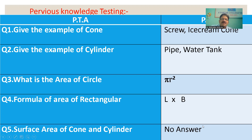First, ask for an example of a cone. From their previous knowledge, students are able to give answers like a screw, ice cream cone, or birthday cap. Second, ask for an example of a cylinder — students give answers like a water tank, gas cylinder, etc. Then ask what is the area of a circle, since these topics are prerequisites for cylinder and cone. They should answer pi r squared.